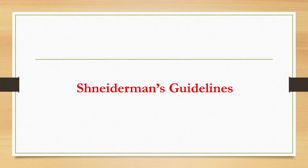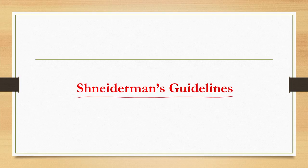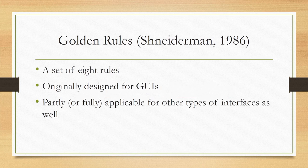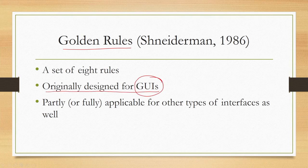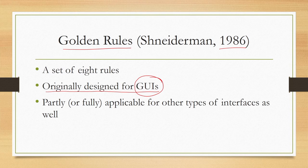In this lecture, we are going to talk about one of the two generic guidelines mentioned earlier — namely the 8 golden rules by Shneiderman, or Shneiderman's guidelines for design of interfaces. In particular, these guidelines are applicable for the design of graphical user interfaces. So these are called golden rules, and there are 8 of them. They are originally designed for graphical user interfaces or GUIs. The golden rules were proposed by Ben Shneiderman way back in 1986, at a time when the idea of personal computers was coming into being and people were trying to develop graphical user interfaces to make computers popular and acceptable to the masses.